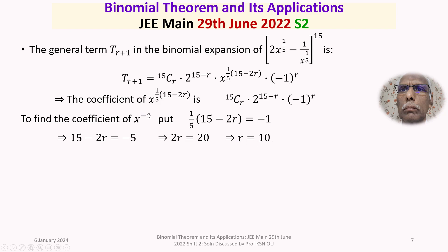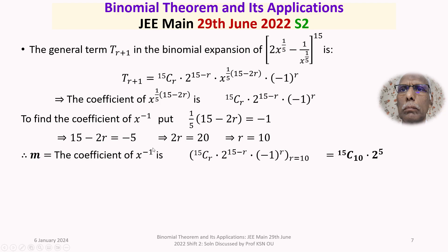The coefficient of x^(-1) is m. Substituting r = 10 into the general coefficient 15Cr · 2^(15-r) · (-1)^r: we get 15C10 · 2^(15-10) · (-1)^10 = 15C10 · 2^5 · 1. Therefore m = 15C10 · 2^5.